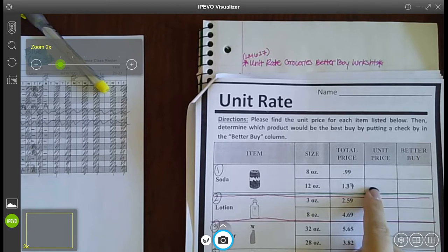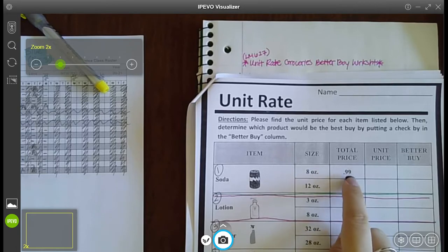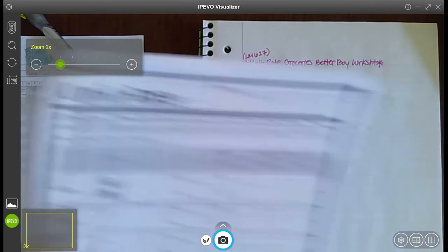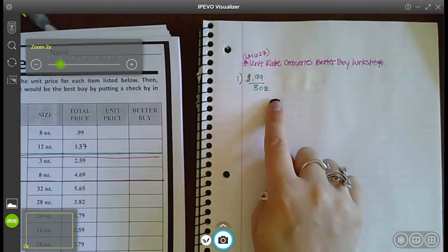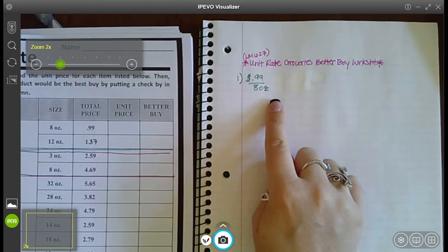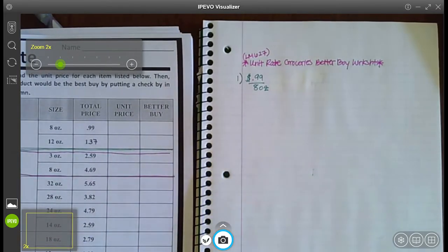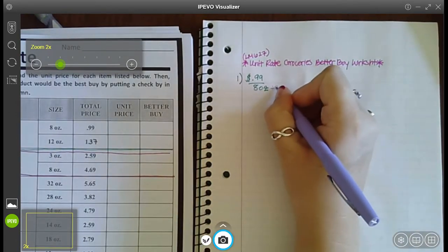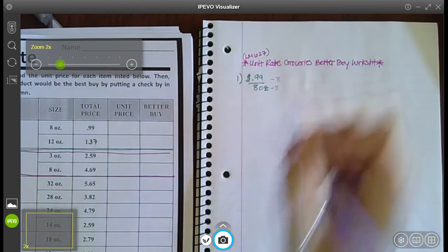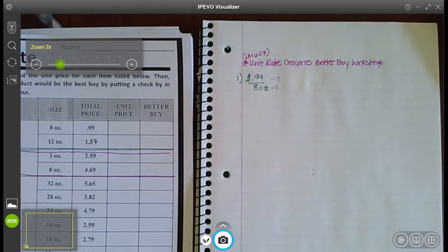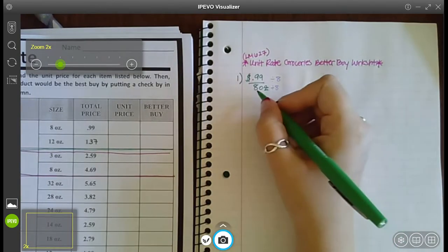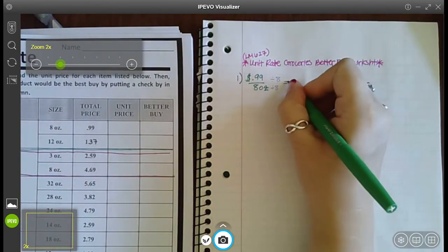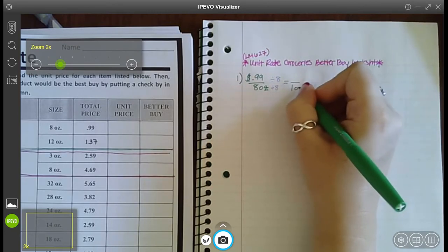Okay, so let's go ahead and try to do the first one: 99 cents for 8 ounces. So if I write that on my piece of paper, 99 cents for 8 ounces, I want to start by finding the unit rate or the unit price and I do that by dividing whatever is in the denominator. 8 is in this denominator, so I'm going to divide them both by 8 because 8 divided by 8 is 1. So now I have 1 ounce.